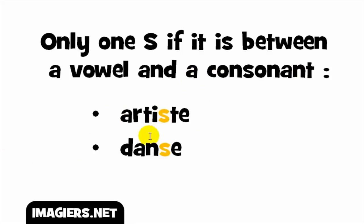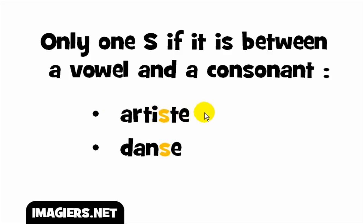Here you see that you get this I vowel before, and then you get the T — so a consonant — here. Okay, and then between them you get S. So you will get the sound — artist.